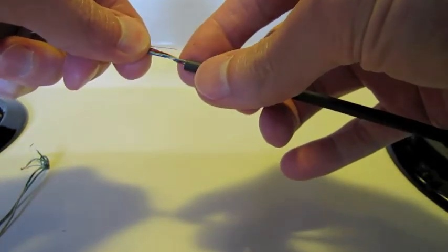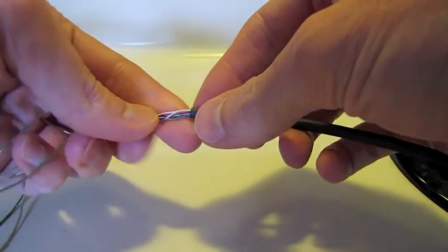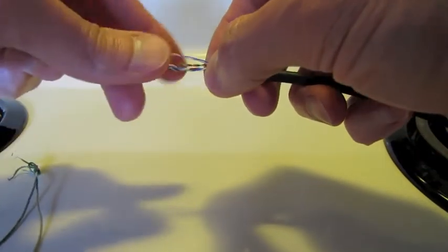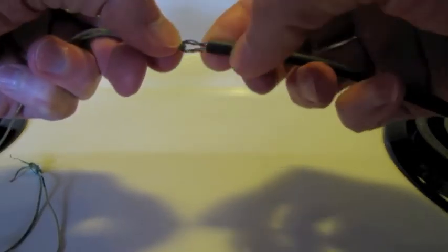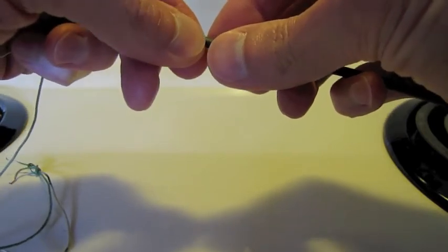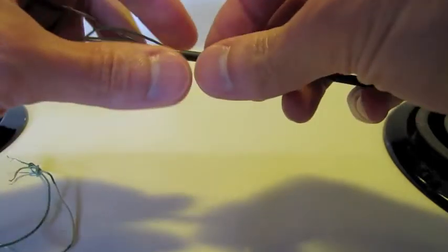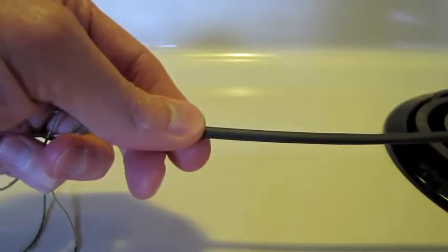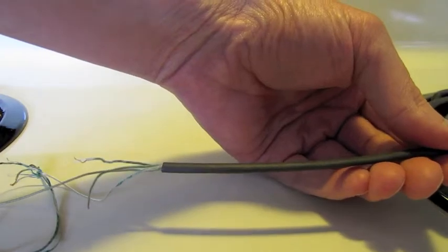Slide the heat shrink tubing over the junction, placing it roughly in the center. Heat the tubing to cause it to shrink around the junction of the wires.